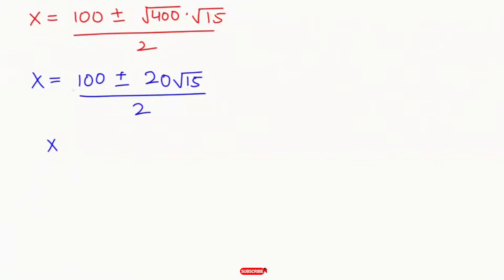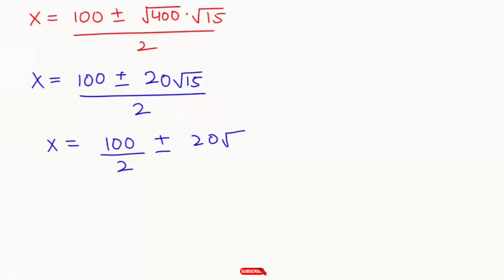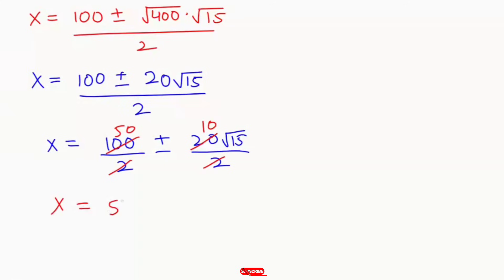The square root of 400 is 20, giving 100 plus or minus 20 root 15, over 2. This 2 divides both terms in the numerator, so we write 100 over 2 plus or minus 20 root 15 over 2, which simplifies to 50 plus or minus 10 root 15.